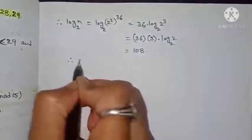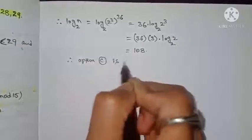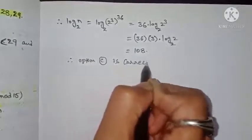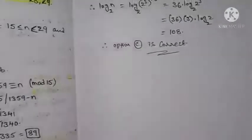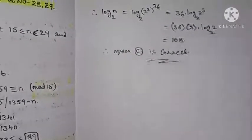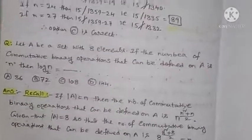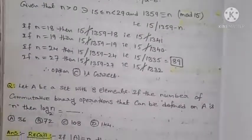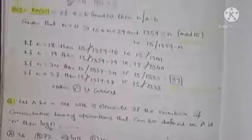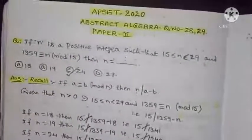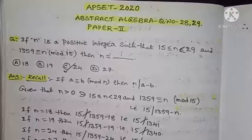Therefore option C is correct. We got log N base 2 as 108, so option number C is the correct option. I hope you like this video. If you like the video, please share and subscribe. Thanks for watching.